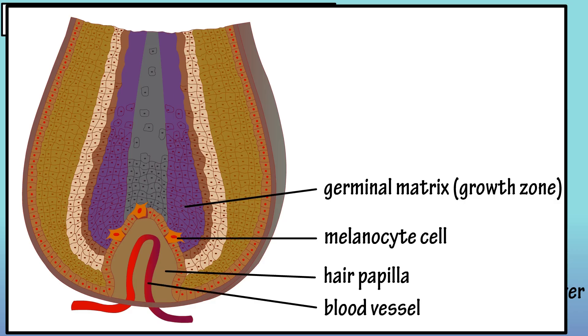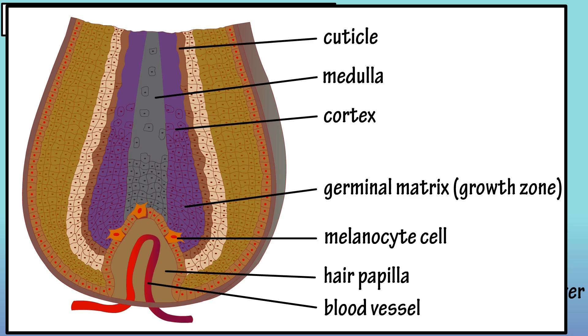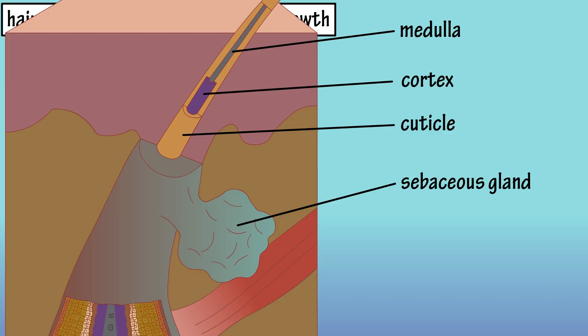Melanocyte cells are also located in the germinal matrix, and they produce the pigment that gives hair its color. The hair blade consists of three sections: the medulla, located in the middle, the cortex, and the cuticle. A sebaceous gland is located here, and an erector pili muscle is located here. We will cover these in a minute.